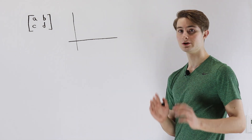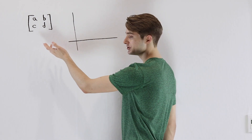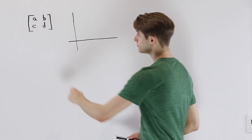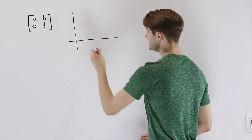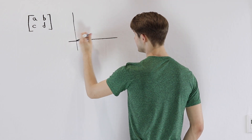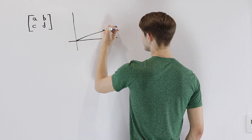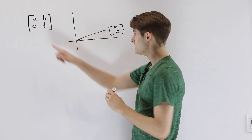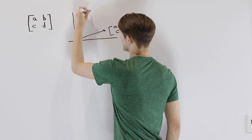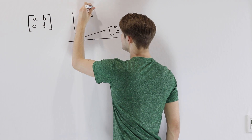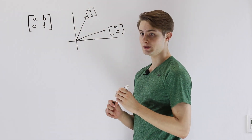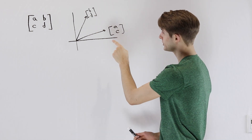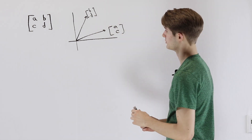When we look at the determinant, it's helpful to remember that a 2x2 matrix like this is actually just two vectors smushed together. We have the vector AC on the left side, which we could put in our 2D plane, and then the vector BD. The determinant of this 2x2 matrix is actually just asking what the area of a parallelogram defined by these two vectors would be.